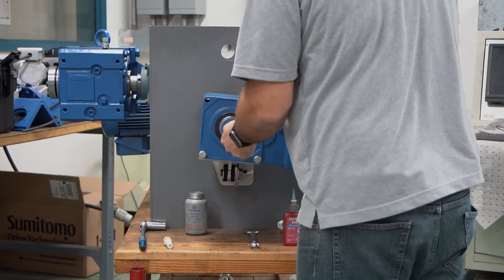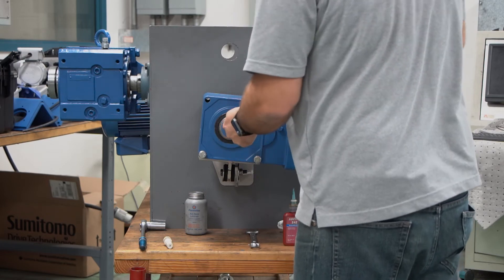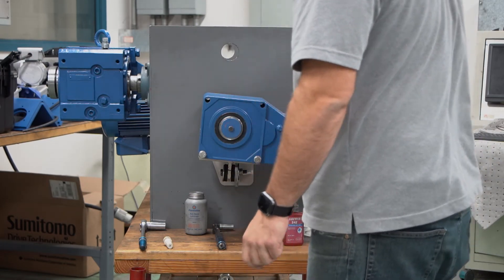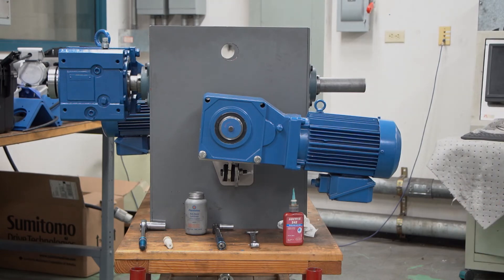Once that's torqued down to spec—the spec is based on your bolt and your shaft size—once that's torqued down to spec, the reducer is mounted. You can proceed to install your safety cover and you're good to go.